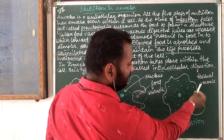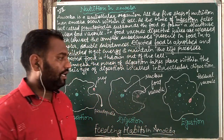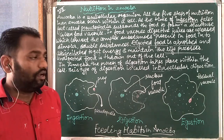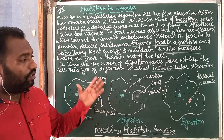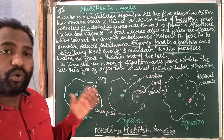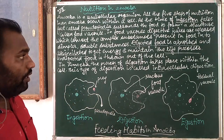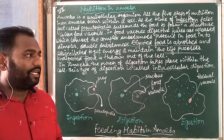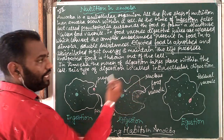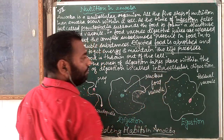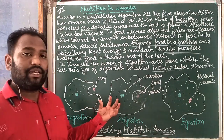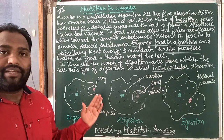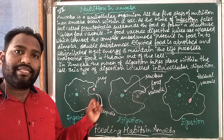When food vacuoles get digested, residual food vacuoles are left inside. At the time of egestion, if some part of the food is unwanted or undigested, it will be thrown out of the body from any part of the external body. This process is known as intracellular digestion — digestion of food just inside the cell. If digestion is possible outside the cell, it is known as extracellular digestion.